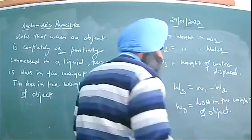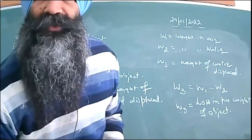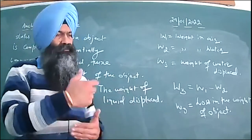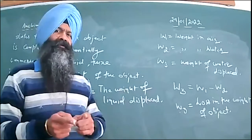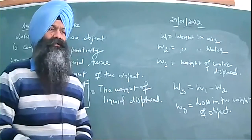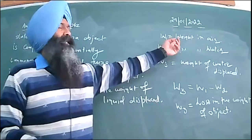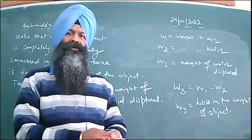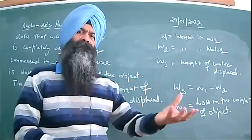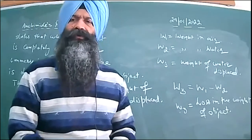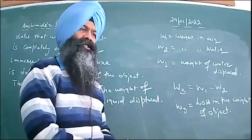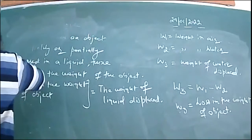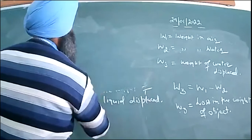Let me explain this once more. First, find the weight of your object in air — call it W1. Then dip it in water — that weight is W2. The weight in water will be less because of the buoyant force acting on the object. Note the difference between the weight in air and in water — that is the loss in weight of the object. It will be equal to the weight of the water that overflowed from the overflow vessel.